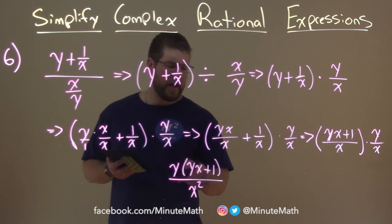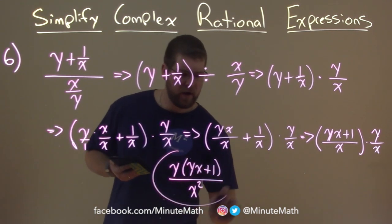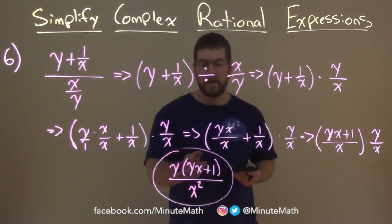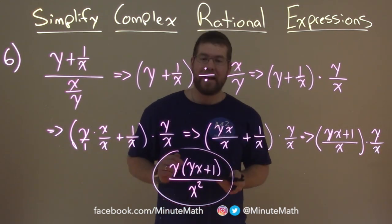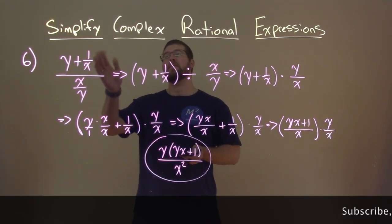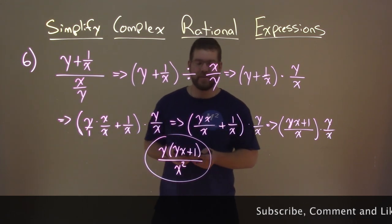And now we've got our final answer. We can rewrite yx to be xy if we want. But we simplified this to be y times yx plus 1 over x squared. And so now we know how to simplify complex rational expressions.